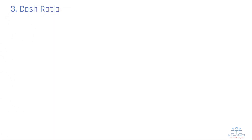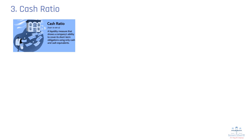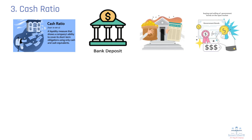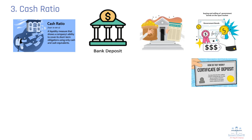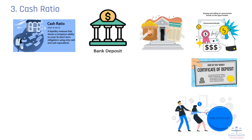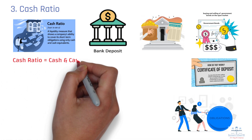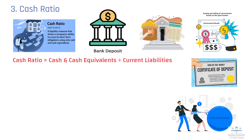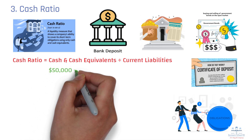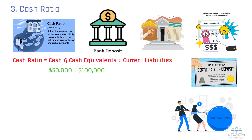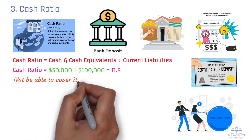Number 3: Cash Ratio. The cash ratio is the most conservative liquidity ratio, as it only considers cash and cash equivalents, such as bank deposits, treasury bills, short-term government bonds, and certificates of deposits (CDs), in relation to current liabilities. Unlike the current and quick ratios, the cash ratio excludes both inventory and accounts receivable, focusing solely on assets that are immediately available to meet obligations. The formula for calculating cash ratio is as follows. For instance, if a company has $50,000 in cash and cash equivalents and $100,000 in current liabilities, the cash ratio is 0.5, meaning the company has $0.50 in cash for every $1 of liability, suggesting it may not be able to cover its short-term obligations with its cash on hand.